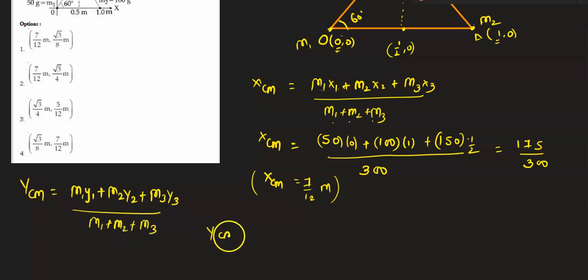I will get ycm after putting the coordinates. m1·y1 is zero, so 50 times zero. Plus m2 is 100 and the y coordinate for this point is zero, so 100 times zero. M3 is 150 grams and y3 is √3/2, upon m1 plus m2 plus m3, so that is 300.